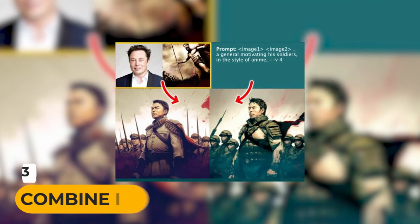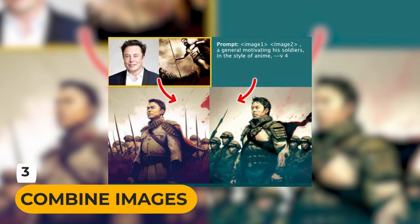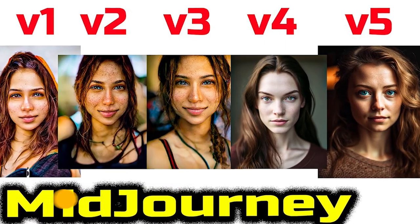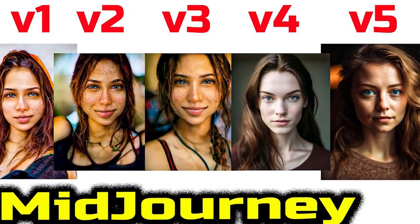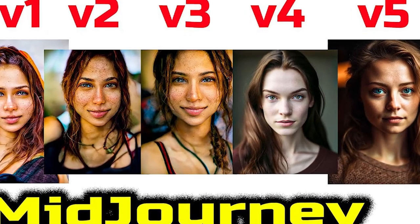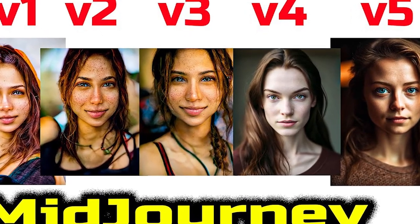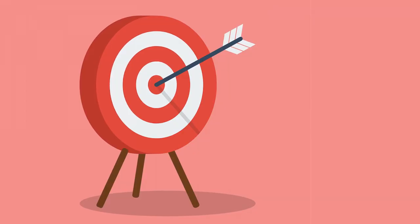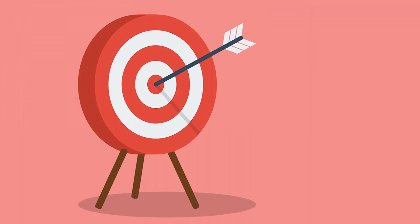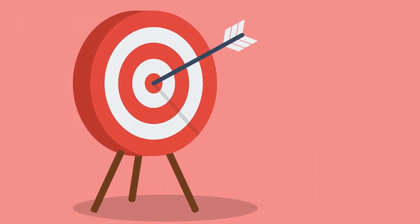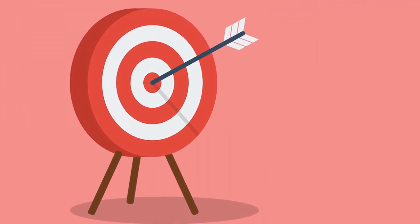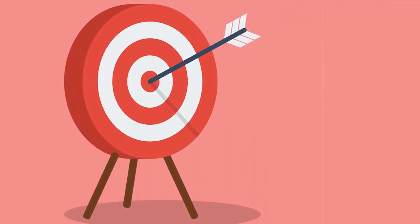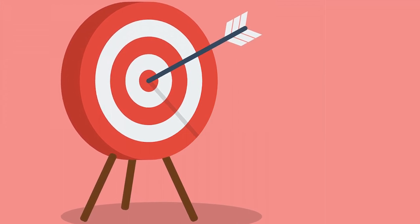Number 3: Combine Images. One of the greatest new features to come out of mid-journey's latest V4 algorithm is much better image prompt support. While previously image prompts were mostly limited to serving as an aspirational target in prompts, they now have a much bigger impact on the final image.